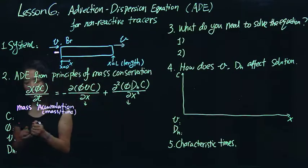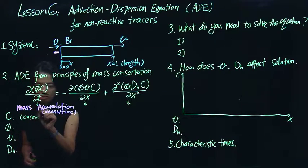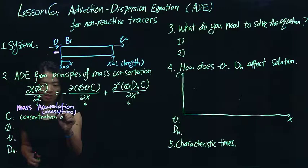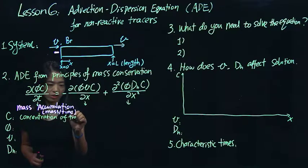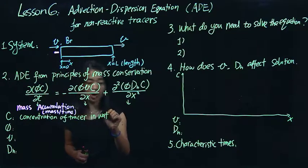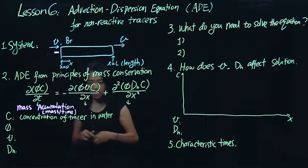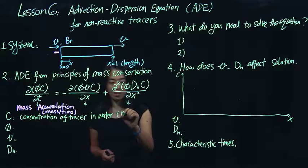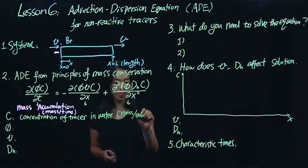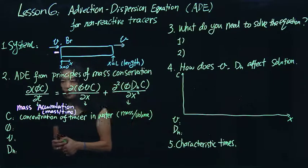And this C is the concentration of that chemical species in the water phase. So C here is concentration of this, let's call it the tracer, in water. So everything we are solving is for how much they have in the water, because that's what we really care about. And this should have the units of, for example, mass per volume. So the first term is mass accumulation.